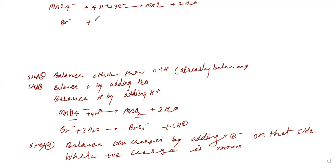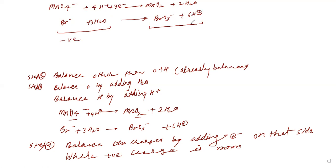For the second half-reaction: Br⁻ plus three H₂O going to BrO₃⁻ plus six H⁺. The left side has one negative charge. The right side has zero net charge. So I need to add six electrons to the right side. Then both sides have one negative charge — charge is balanced.